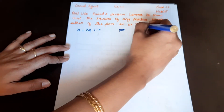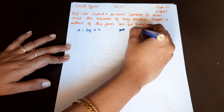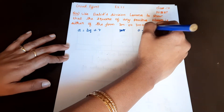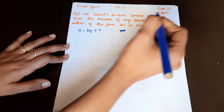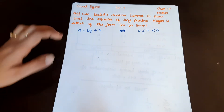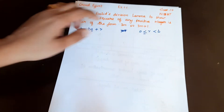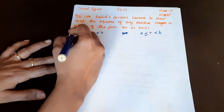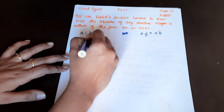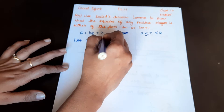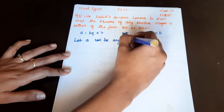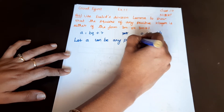The remainder r satisfies 0 ≤ r < b, where b is the divisor. So if we have any positive integer, we say that a can be any positive integer, and b is equal to 3.